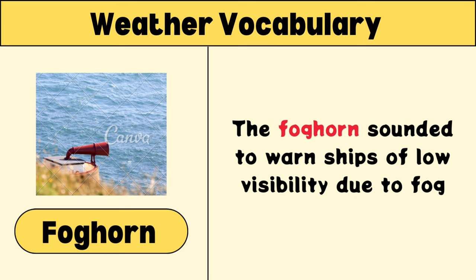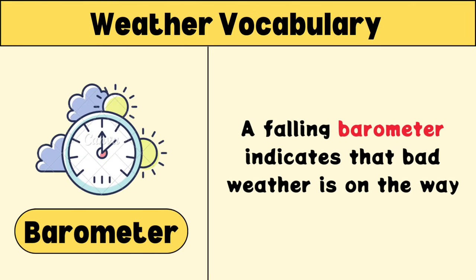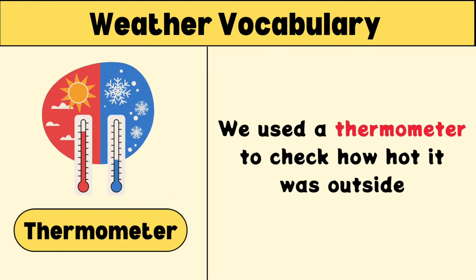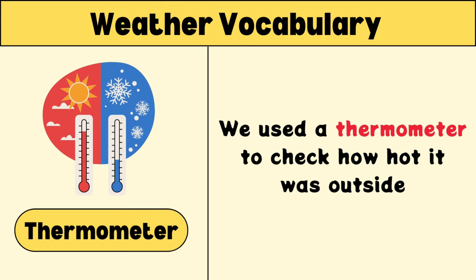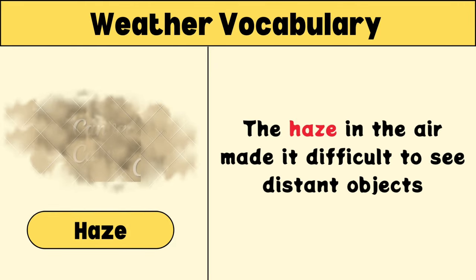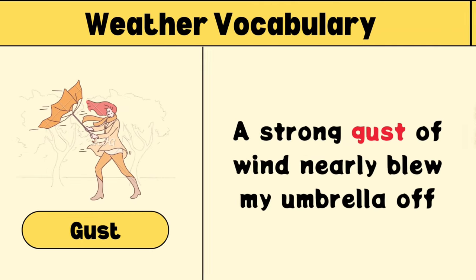Foghorn: the foghorn sounded due to high humidity from fog. Barometer: a falling barometer indicates that bad weather is on the way. Meteorology: meteorology is the study of the earth's weather. Thermometer: we used a thermometer to check how hot it was outside.